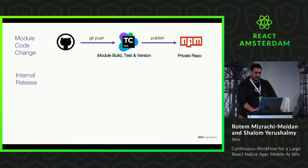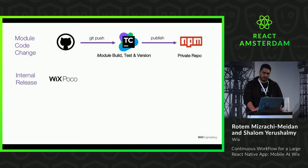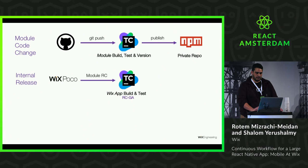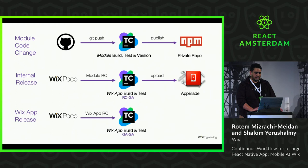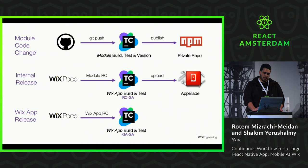The internal release process — the RC process for a module — is triggered in POCO, which triggers the Wix app build with this specific RC version of the module. If all is okay, the IPA and APK are uploaded to our blade. The Wix app release — the GA build released to the stores — is also triggered via POCO, building in TeamCity with all GA modules as in the package.json. The IPA is then uploaded to TestFlight and the APK goes to Google Play.